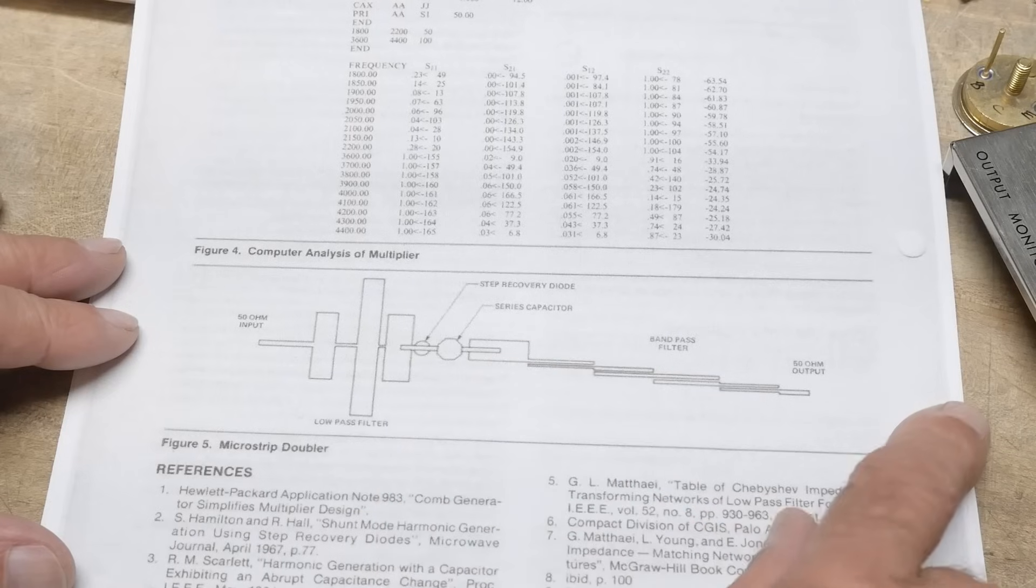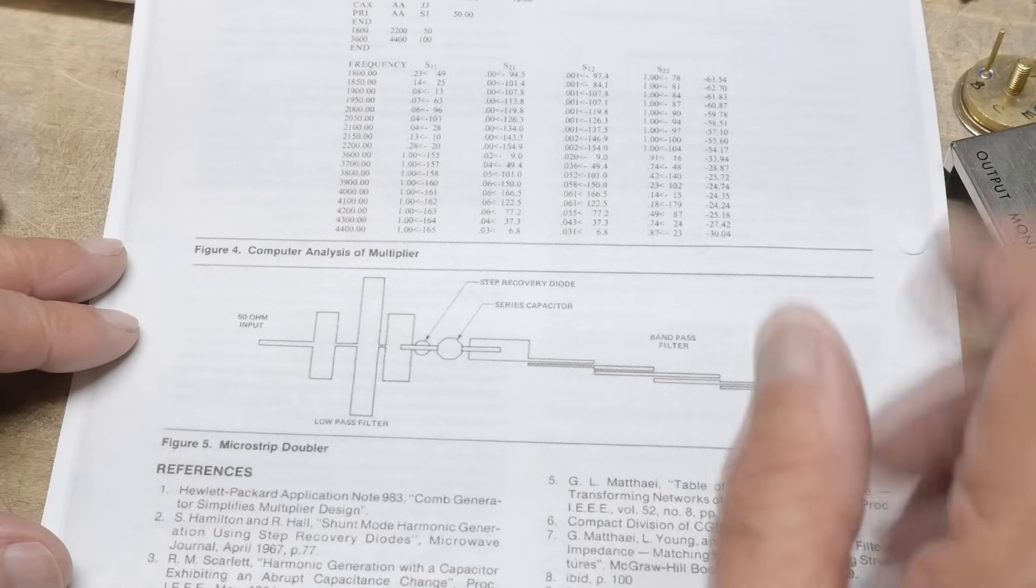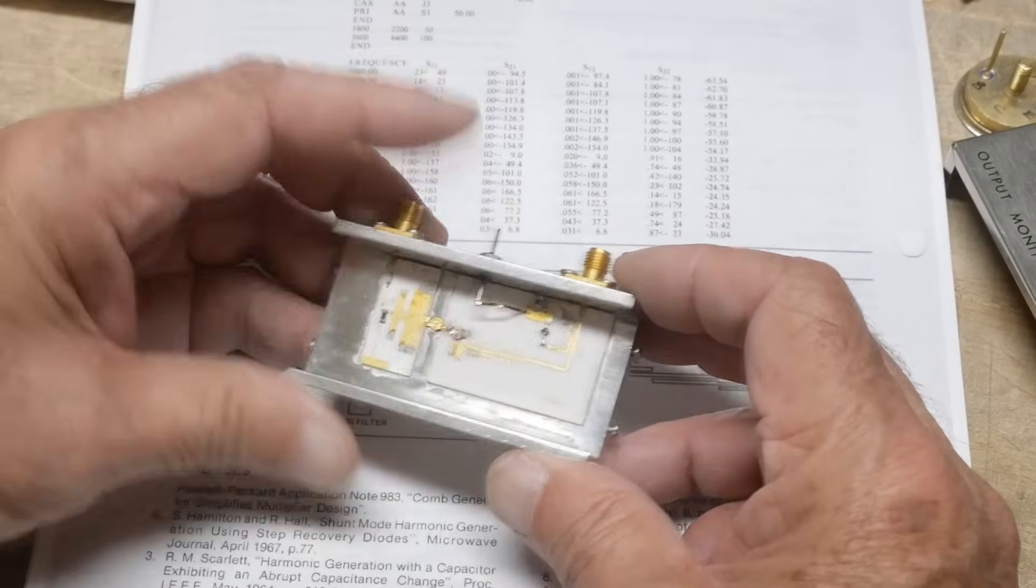One keeps it from going that way, and one makes it go that way and attenuates everything else. So yeah, it's pretty simple once you figure it out.